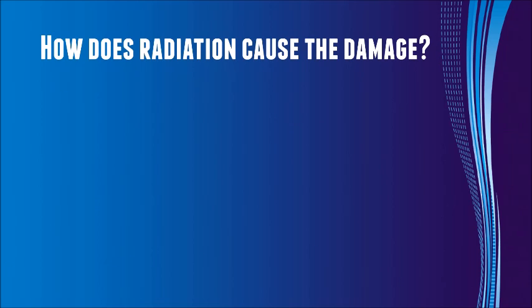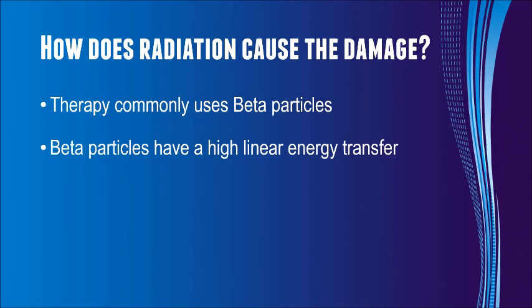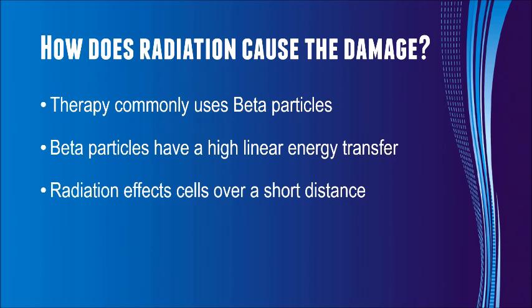How does radiation cause damage? The different types of radiation were briefly explained in Video 1. Therapy commonly uses a type of radiation called beta particles. Beta particles are good for therapy because they have a high linear energy transfer. What this means is that they deliver their dose over a short distance. This means that it only damages target cells and spares normal tissue.